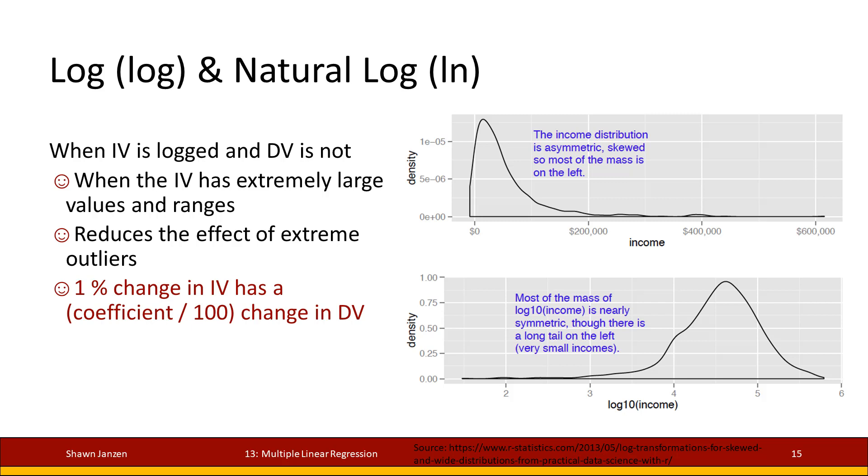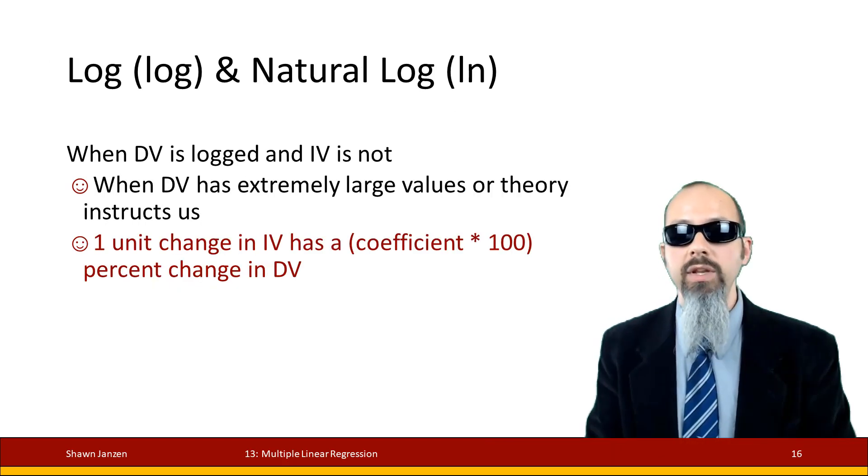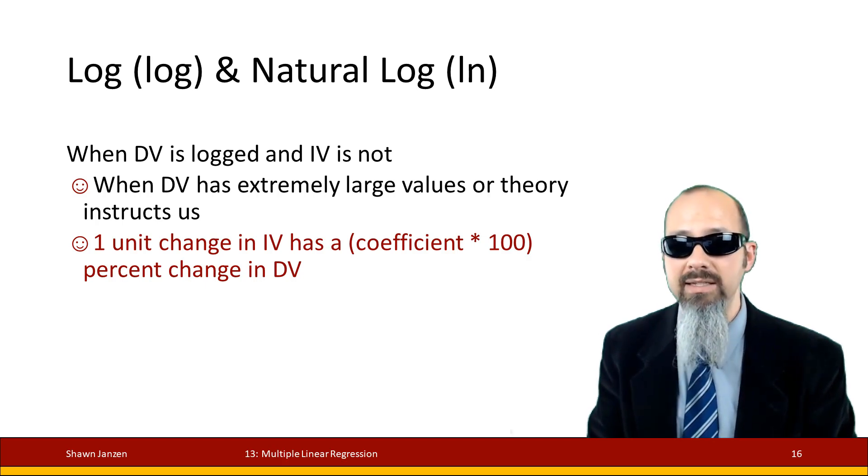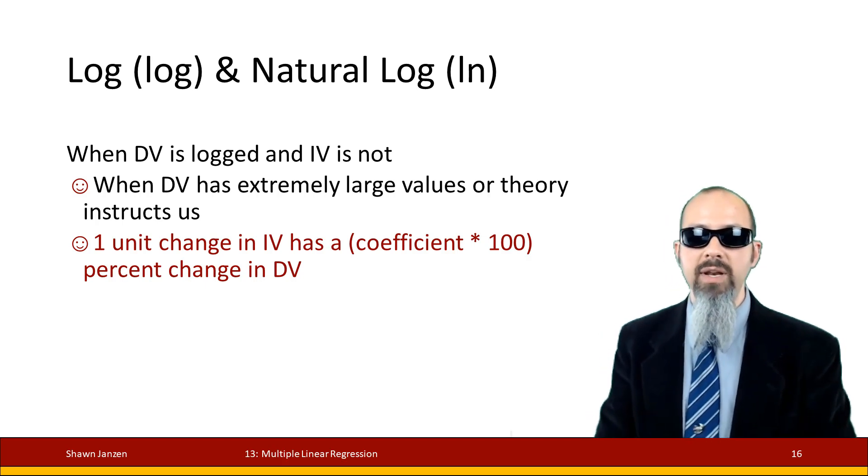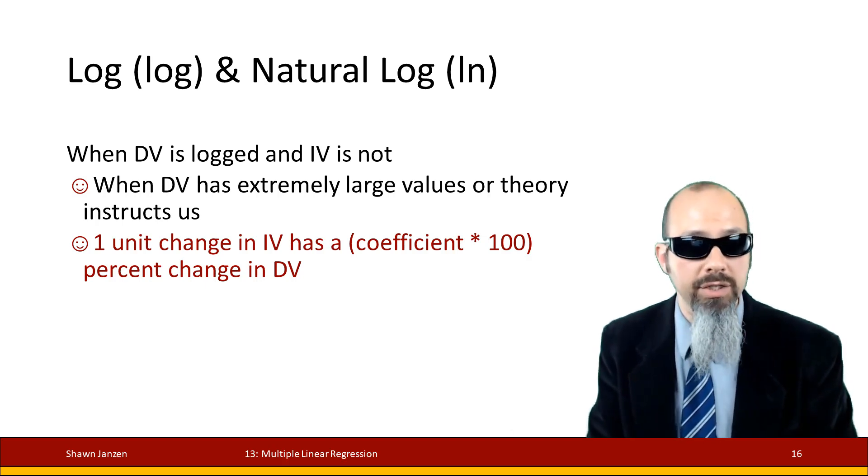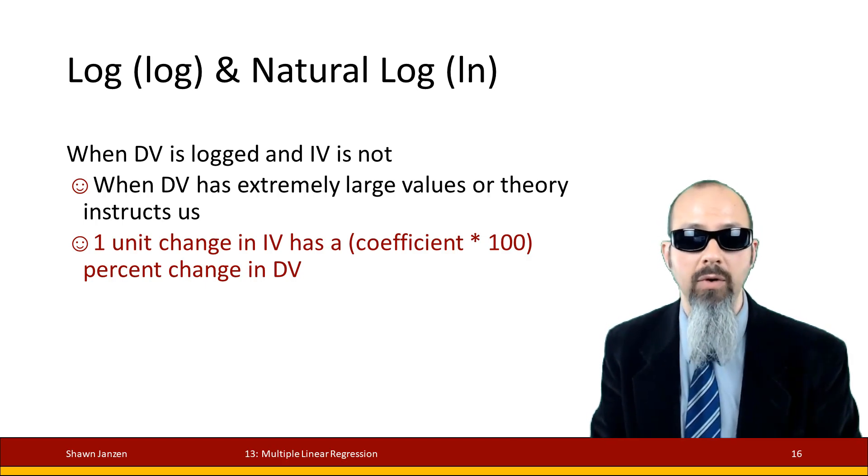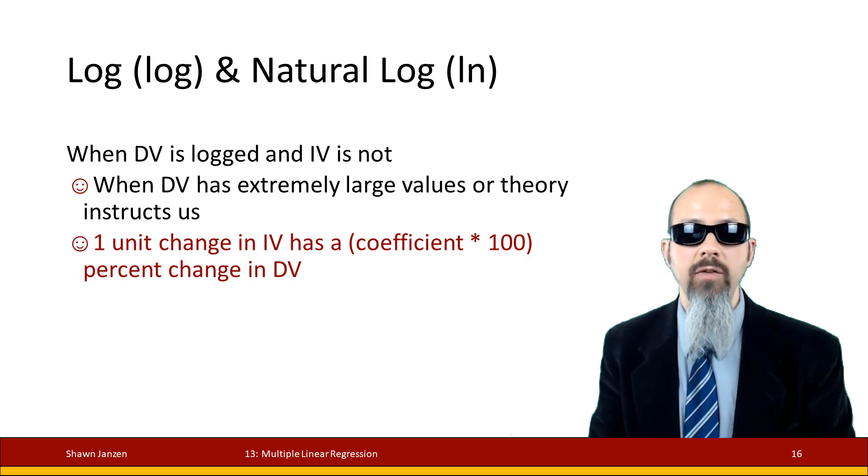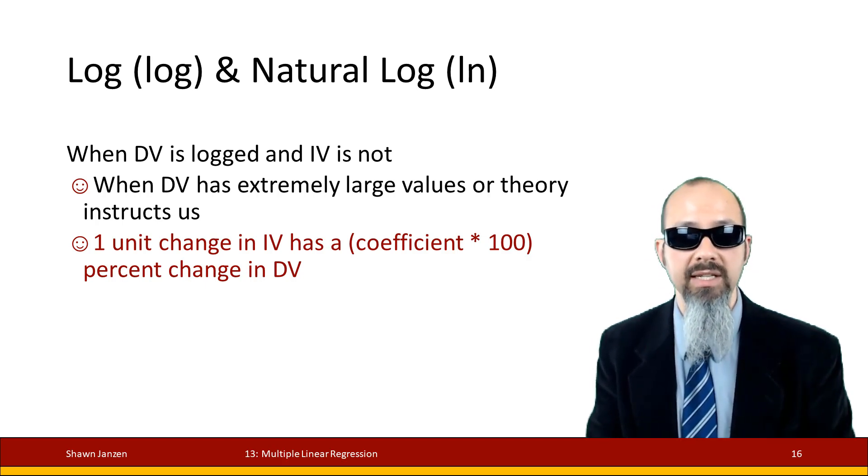When you're dealing with the dependent variable being logged and the independent is not, then the dependent variable might have extremely large values that we need to account for. And then we can say the 1 unit change in the independent variable has a coefficient times 100 change percent in the DV. So it's percent change in the DV at a coefficient times 100 for every unit change in the IV.